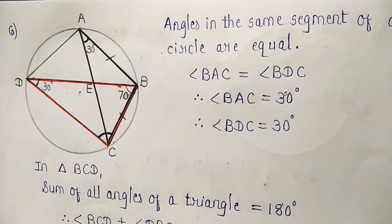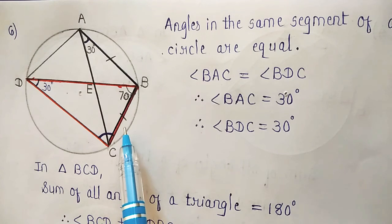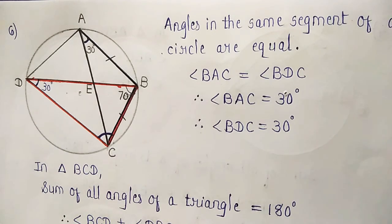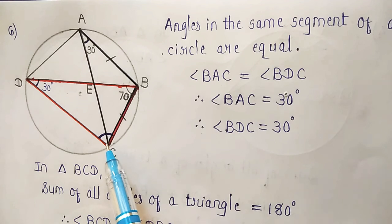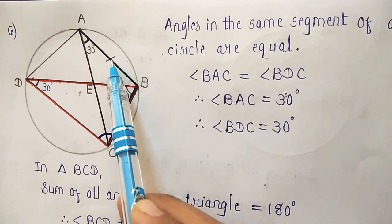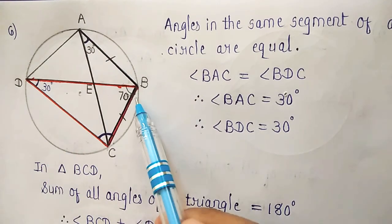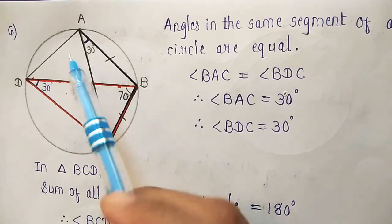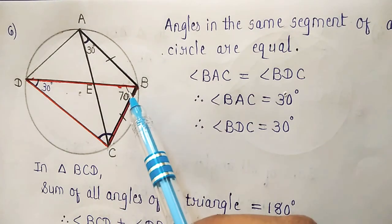Now let us refer to triangle ABC. In the question it is given that AB equals BC. We know that if two sides are equal, their opposite angles are equal — angles opposite to equal sides of a triangle are equal. The angle opposite to side AB is angle BCA, and the angle opposite to side BC is angle BAC. Therefore, angle BAC equals angle BCA.